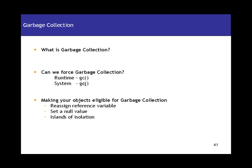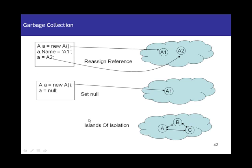The garbage collector is responsible for clearing up all the unused objects. We can request the garbage collector to run so that it clears up the memory. But from a programming perspective, how can I make a particular object eligible for garbage collection? We know that the garbage collector collects all unused objects. There are three mechanisms: one — reassign the reference variable; two — set a null value; three — islands of isolation.